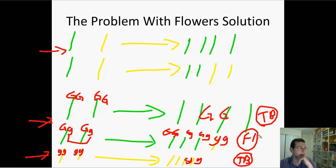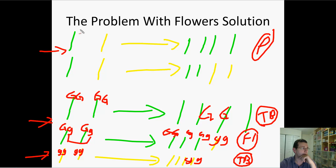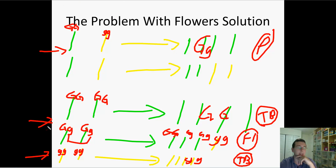Now let's look at the cross where he crosses two different flowers and always gets the same result. He realized he's actually doing a P cross — crossing big G, big G with little g, little g, a pure green and a pure yellow. All the children are going to be hybrids, so you're doing a P1 cross, and that's why you always get those results. Hybrids look dominant, so they always look green no matter how many times you try that cross.